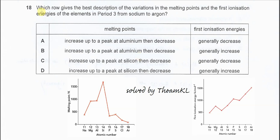Question 18. Which row gives the best description of the variation in the melting point and the first ionization energies of the elements in period 3?